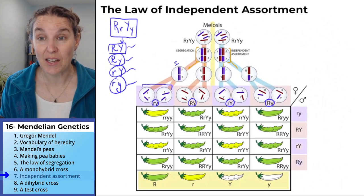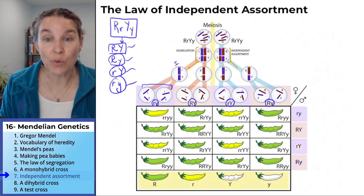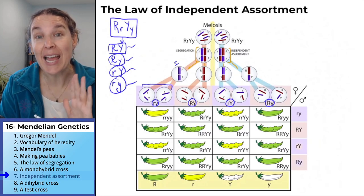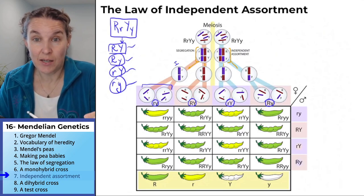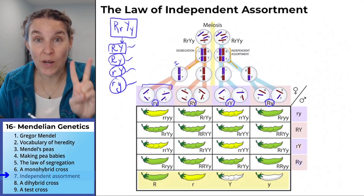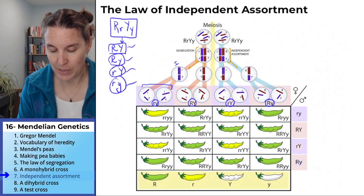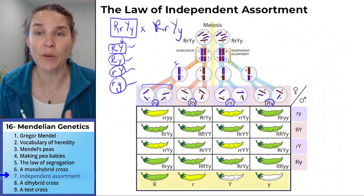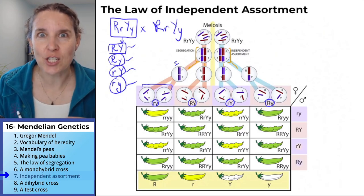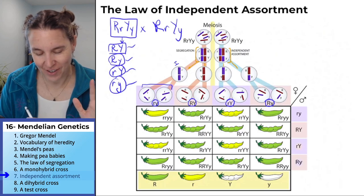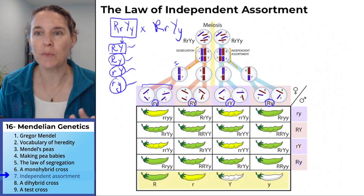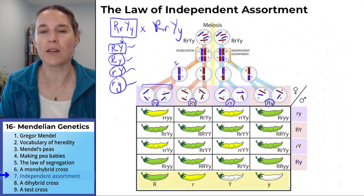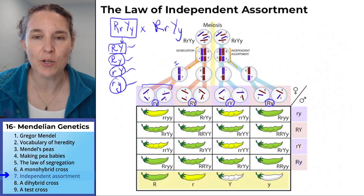I'm going to leave this and we're going to do our own dihybrid cross. Remember, a monohybrid cross had one heterozygous trait that we crossed. If we have two heterozygous traits — that's the dihybrid cross. I want to take us away and do it ourselves on a clean sheet of paper and go through our four steps so that we do the whole thing ourselves. Dihybrid cross, coming at ya.